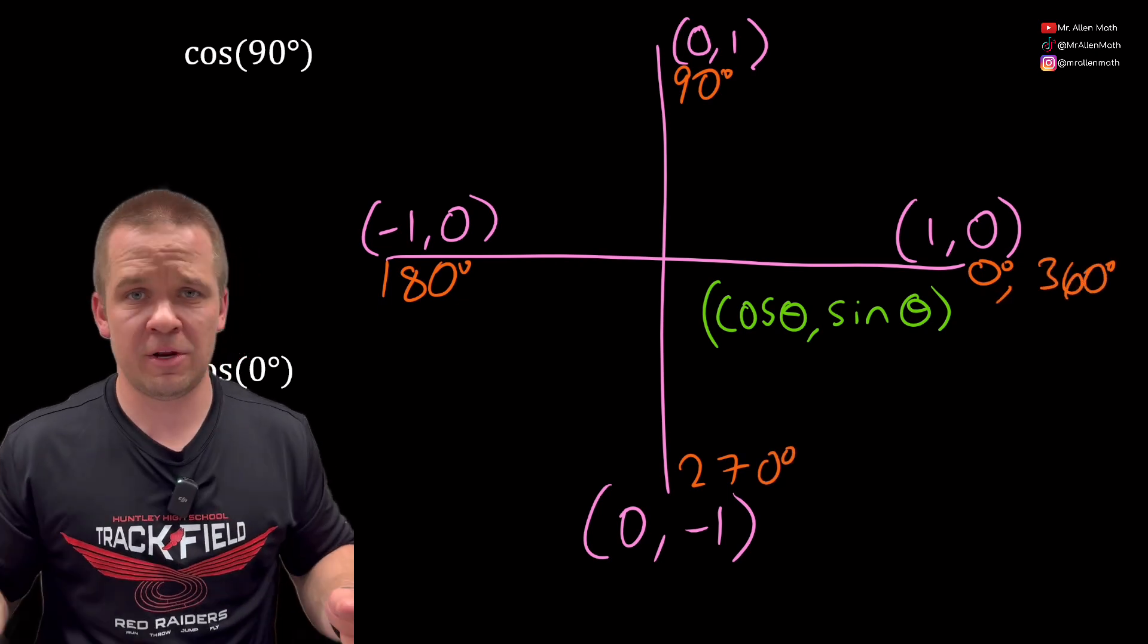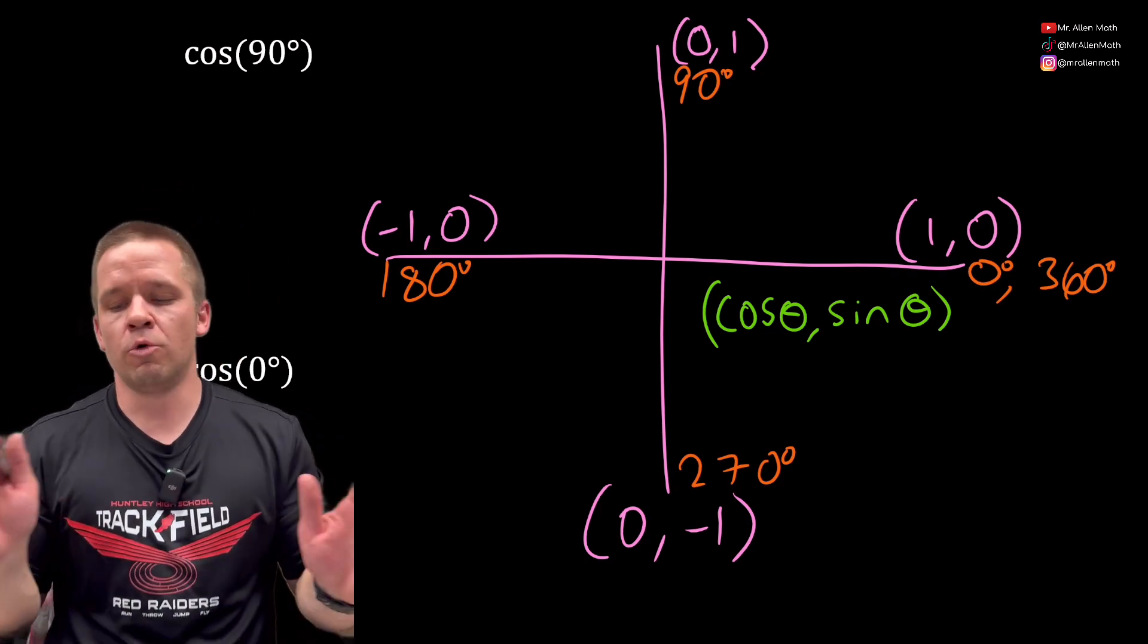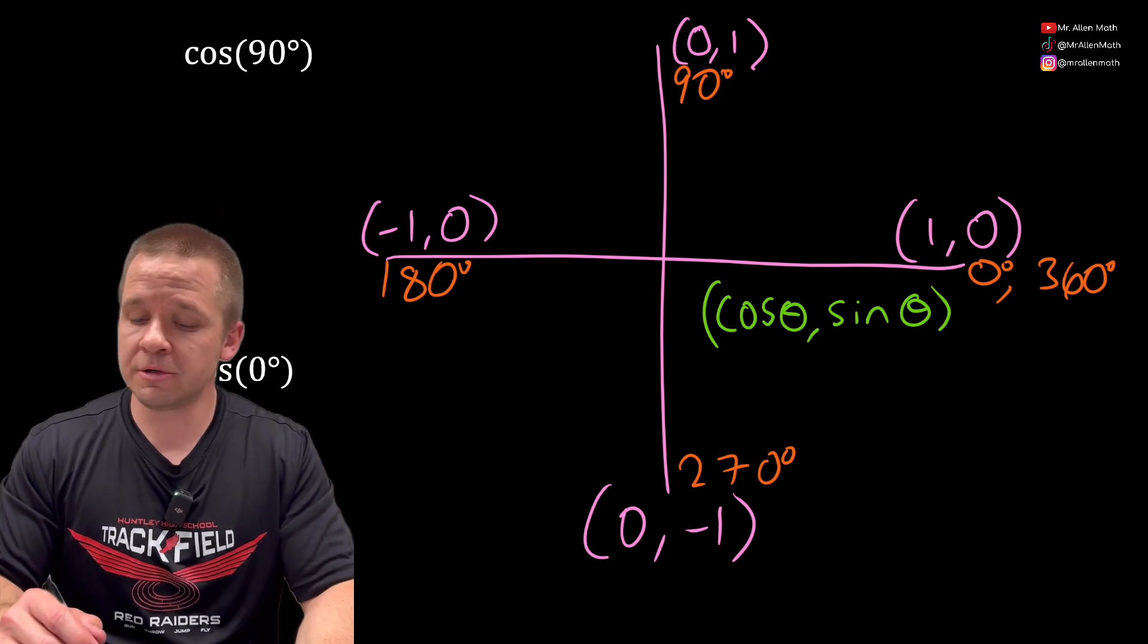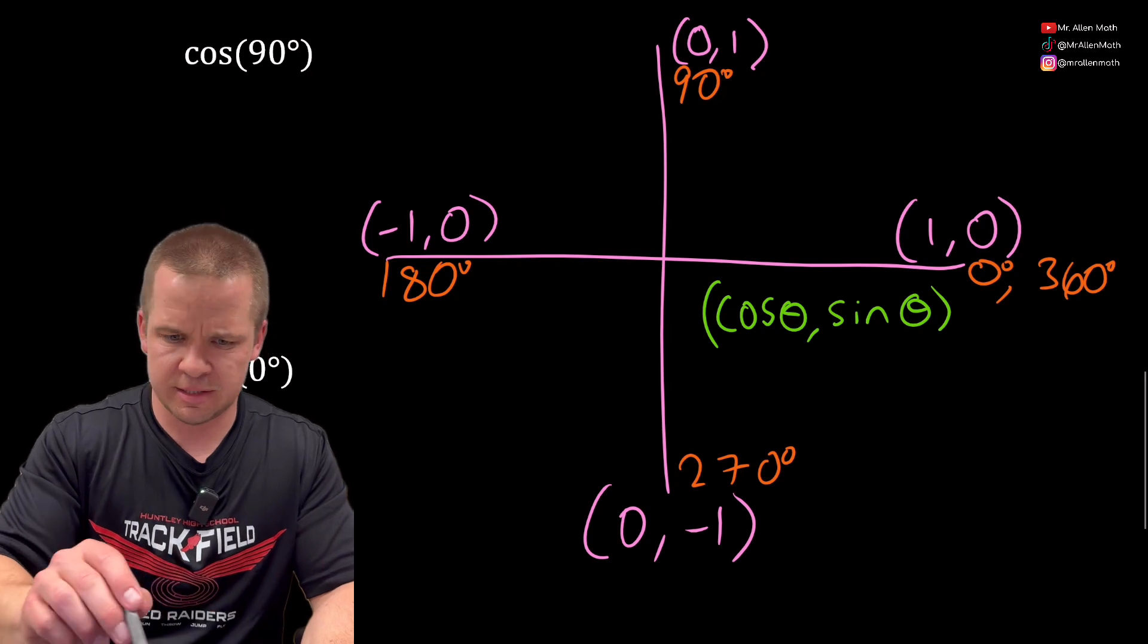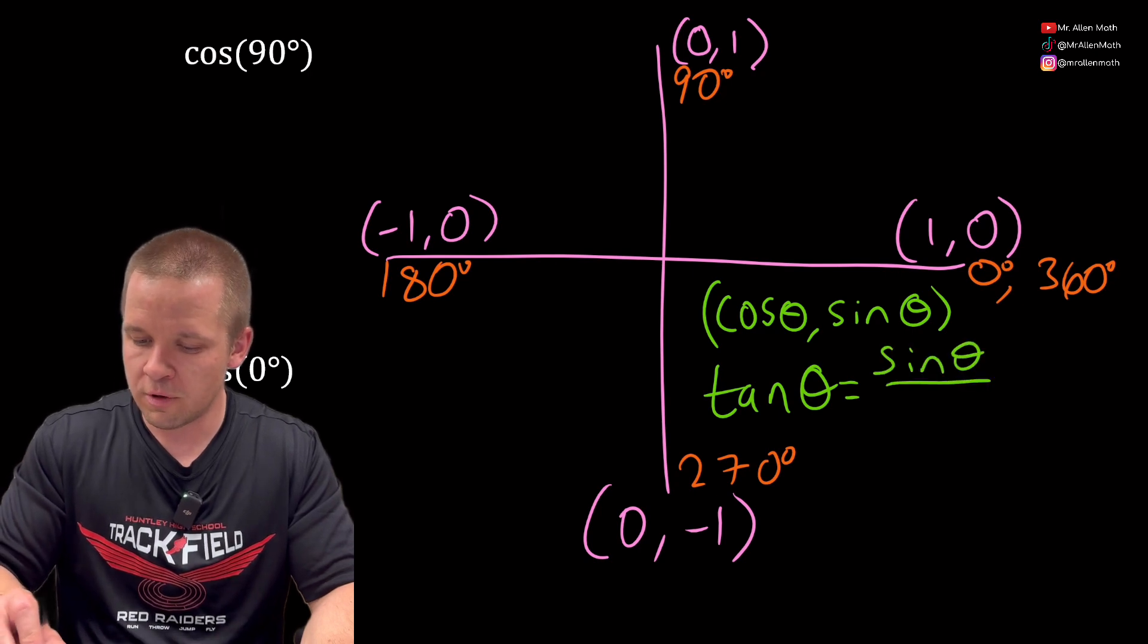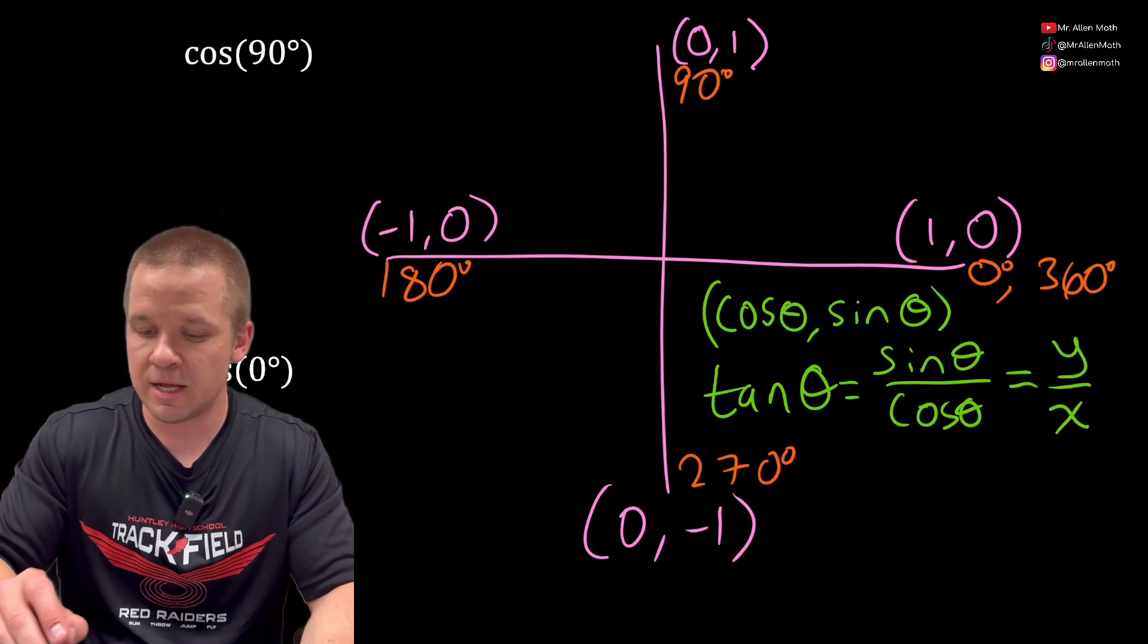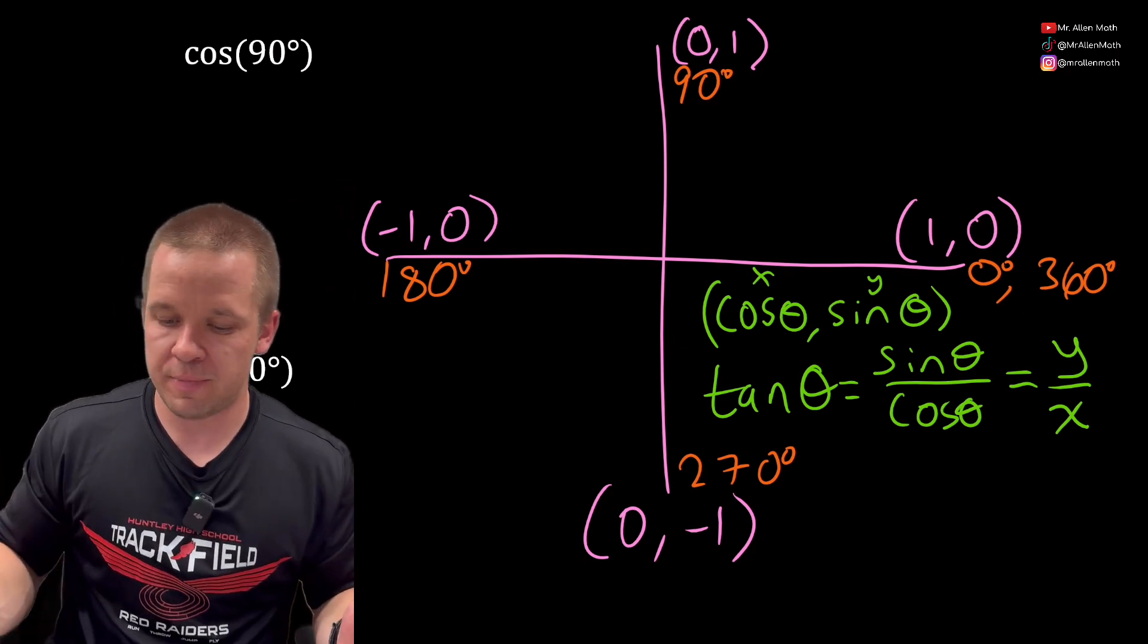We're doing everything in degrees here. I have other videos on radians if you're a radian type of person. We're doing all degrees on these. Last thing we're gonna write down here is that tangent of theta equals sine over cosine, or in other words, our y coordinate over our x coordinate. This is our x, that's our y coordinate of these ordered pairs.